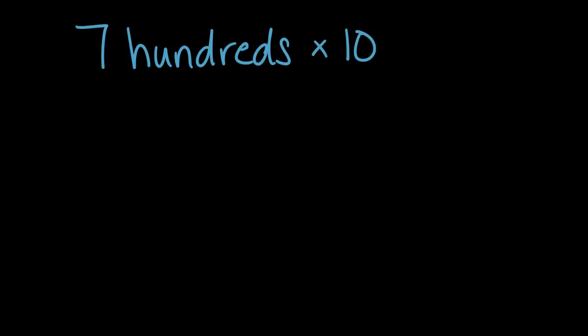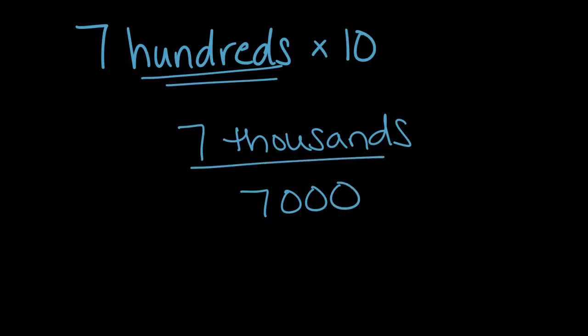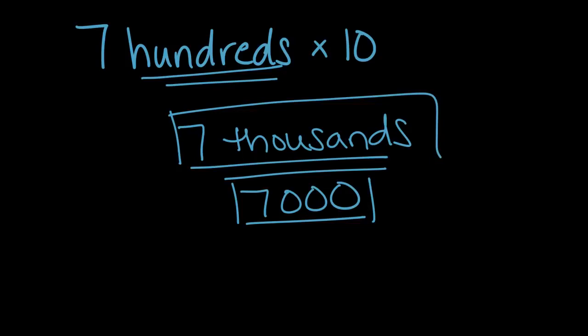So if we do that with this same question — seven hundred — if we move hundreds one place value to the left, we'll end up with thousands. So seven hundred times ten is seven thousands, or as we saw earlier, 7,000. Either one of these is a correct answer. Seven hundred times ten is seven thousand.